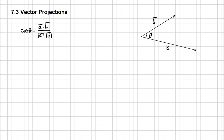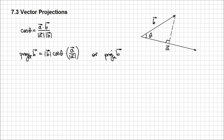Now we want to talk about vector projections. On this diagram I'm going to consider the projection of vector b on a — pay attention to the notation and how it's read. The projection of vector b on a equals the magnitude of vector b times cosine of theta times a over the magnitude of a. Or using another notation: the projection of vector b on a is the dot product between b and a, over the dot product between a and a, all multiplied by vector a.